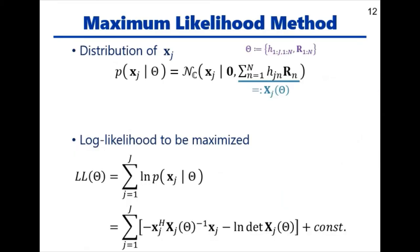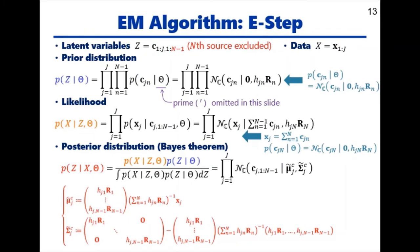As we saw earlier, the mixtures have this complex Gaussian distribution. Let us denote this covariance matrix by capital X. In the Maximum Likelihood method, the parameters are estimated by maximizing the log likelihood, which is given by this equation as before. In our case, the latent variables Z consist of source images. What's tricky here is that we exclude the Nth source image from Z. The E step updates the posterior distribution of Z given X, which is given by this equation because of Bayes' theorem.